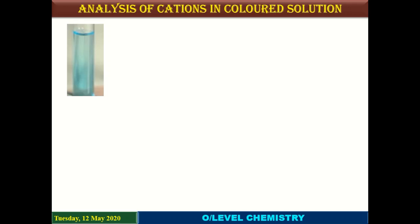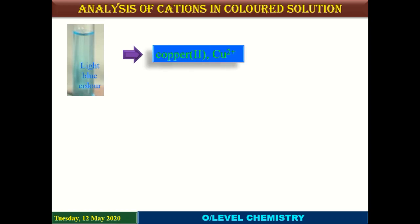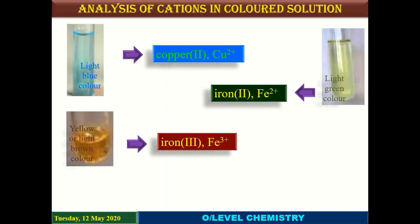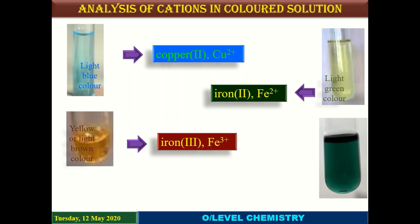For example, if you have a blue colored solution, it shows the presence of copper 2 ions. If you have a light green or yellowish green colored solution, it shows the presence of iron 2 ions, also called ferrous ion. A yellow or light brown colored solution shows the presence of iron 3 ions, also called ferric ion. A dark green colored solution shows the presence of chromium 3 ions.